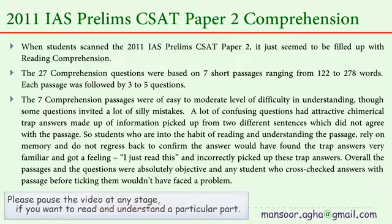A lot of confusing questions had attractive chimerical trap answers made up of information picked up from two different sentences that did not agree with the passage. Students who are in the habit of reading and understanding the passage but rely on memory and do not regress back to confirm the answer would have found the trap answers very familiar and incorrectly picked them up. Overall, the passages and questions were absolutely objective, and any student who cross-checked answers with the passage before ticking them wouldn't have faced a problem.